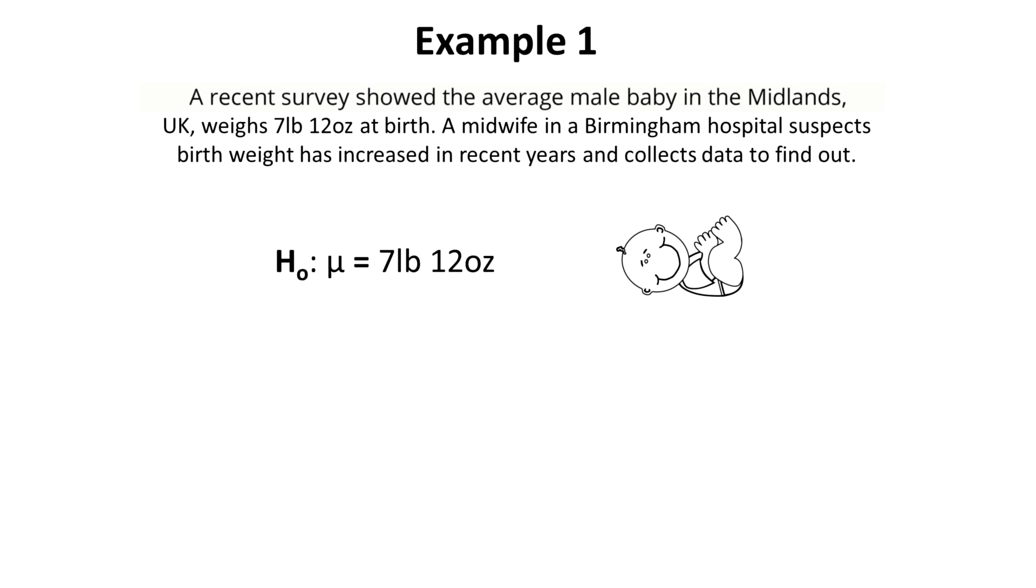The alternative hypothesis is the new idea. So in this case, the midwife believes that the birth weight has increased in recent years. So the alternative hypothesis mu is greater than seven pound twelve. We could have used a range of alternative symbols here, depending on what the midwife wanted to test. For example, less than, less than or equal to, greater than or equal to, or not equal to.